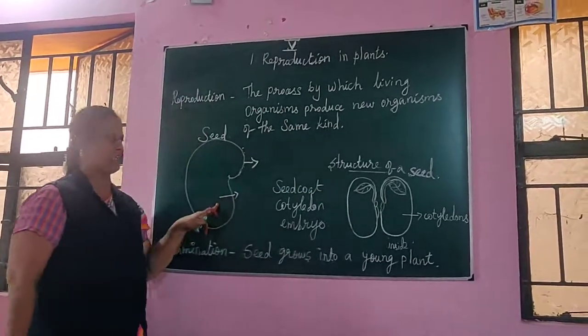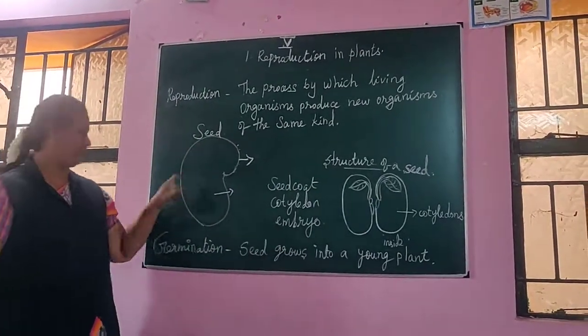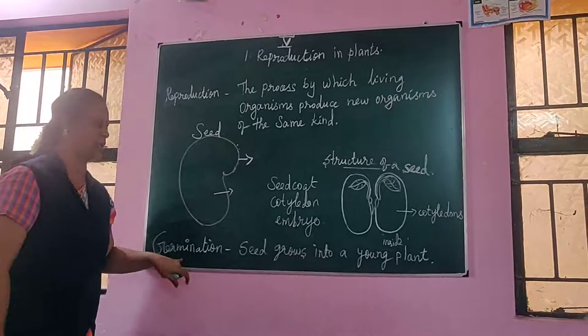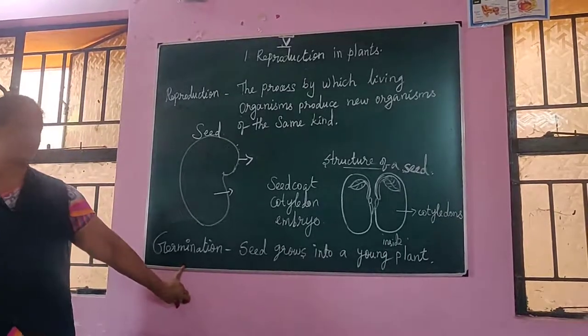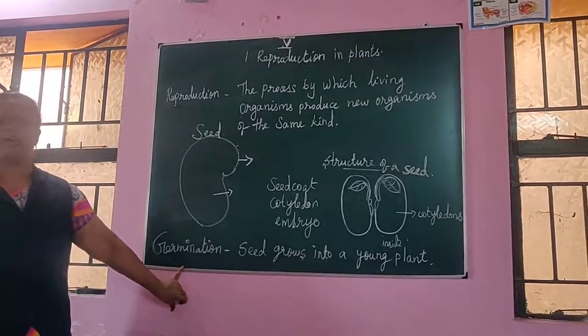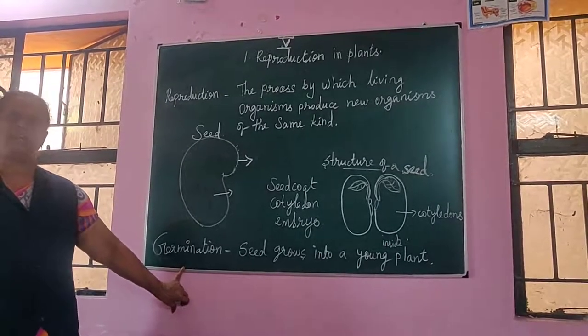The cotyledon is a part found inside the seed. Next is germination. Germination means the growth of a seed into a new plant — the seed becomes a new plant.